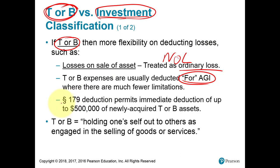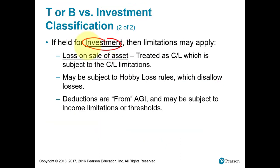In the depreciation chapter we'll cover something called Section 179, where you can deduct right away in the year you purchase a big asset versus depreciating it over the life of the asset. Investment losses — when you sell an investment and incur a loss, it's going to be a capital loss. Capital losses are used to offset capital gains, and then another $3,000 of the loss can offset other income. Any unused capital losses after that are carried over to next year. Hobby losses: not deductible.